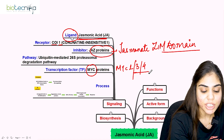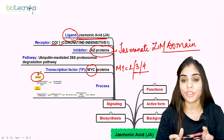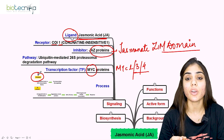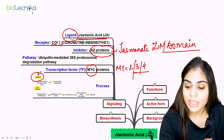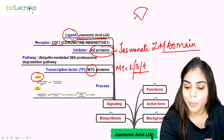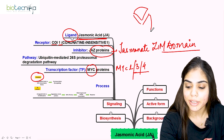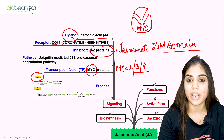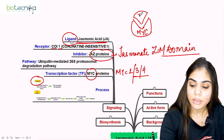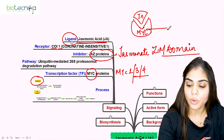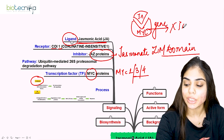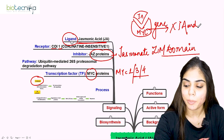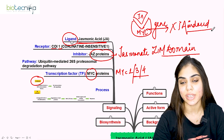When no jasmonic acid is present, it will not bind to the COI1 receptor. The JAZ protein therefore always occupies and inhibits the MYC transcription factor. As a result, no gene expression occurs and no jasmonic acid induced response is seen in the plant.